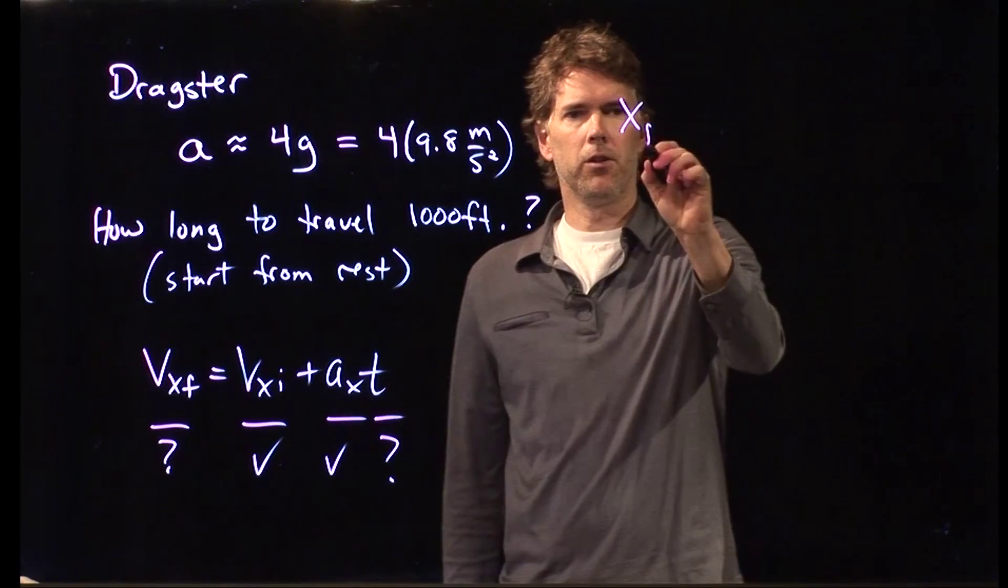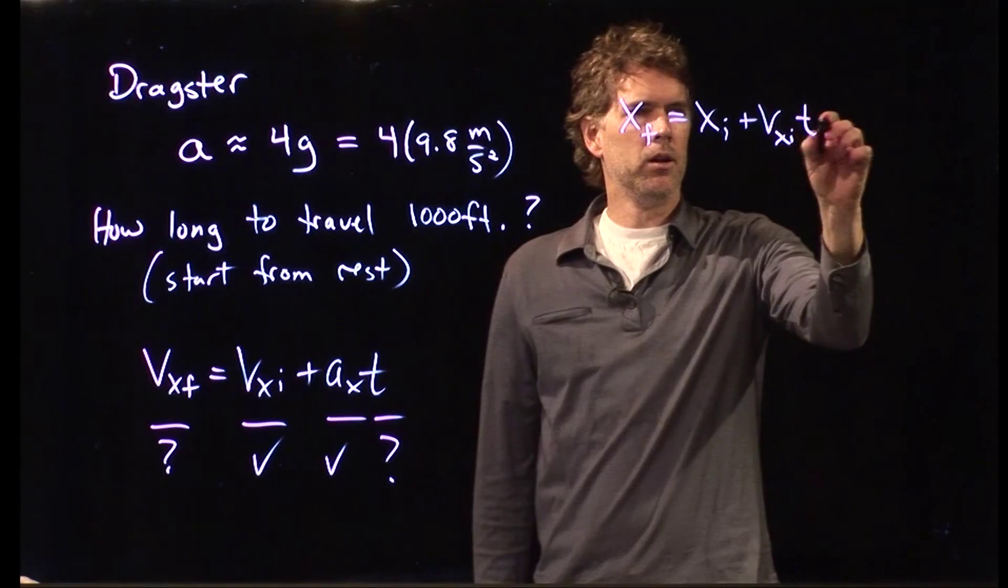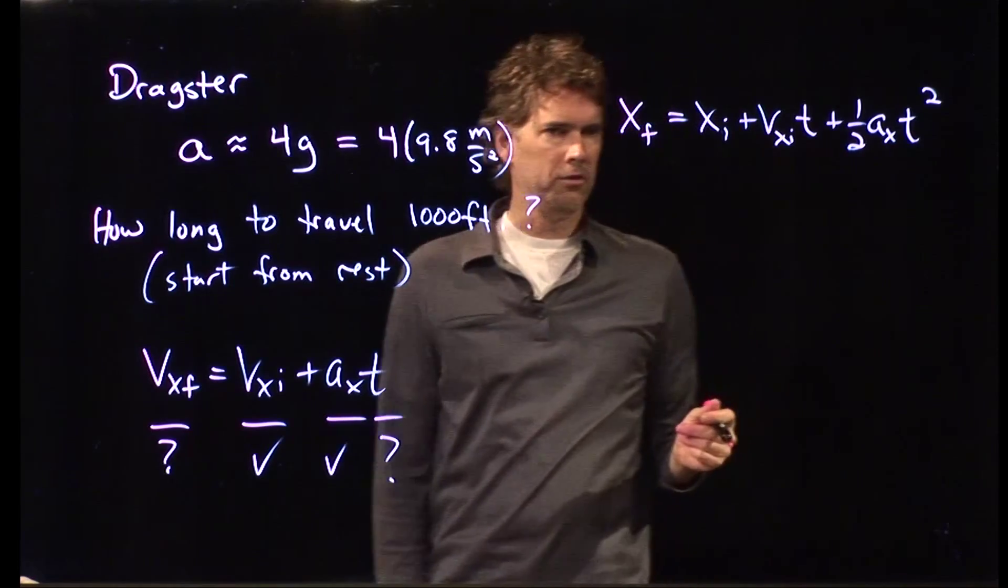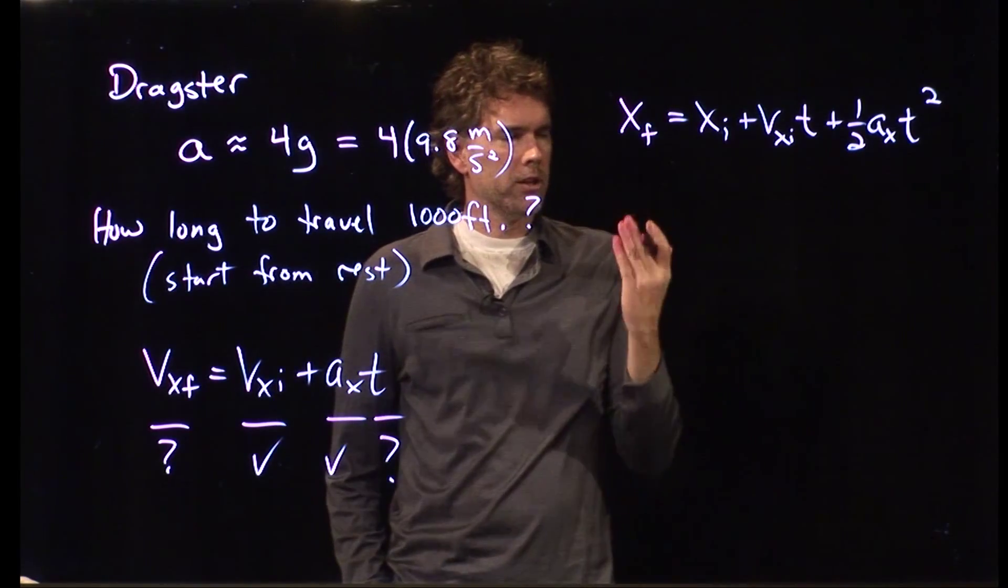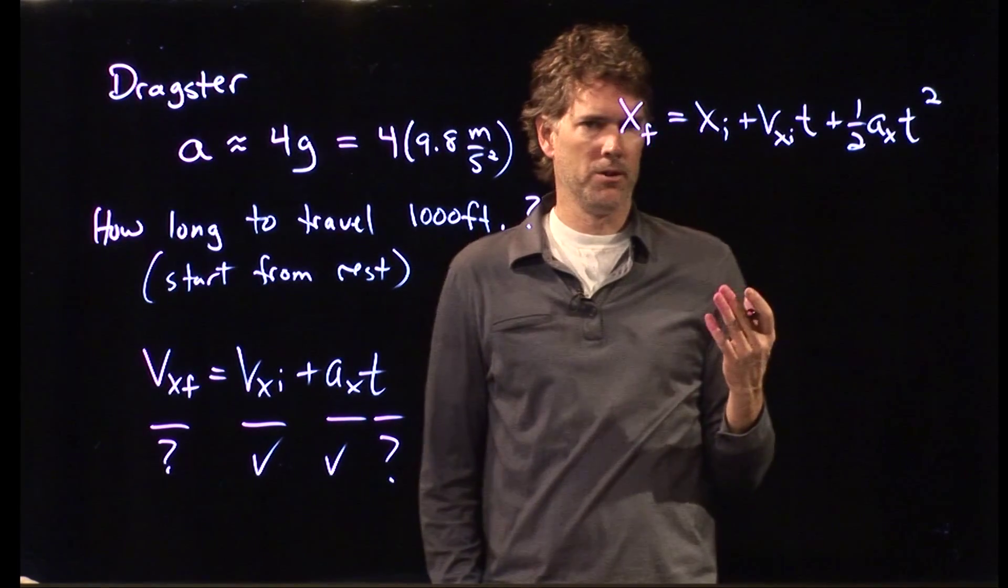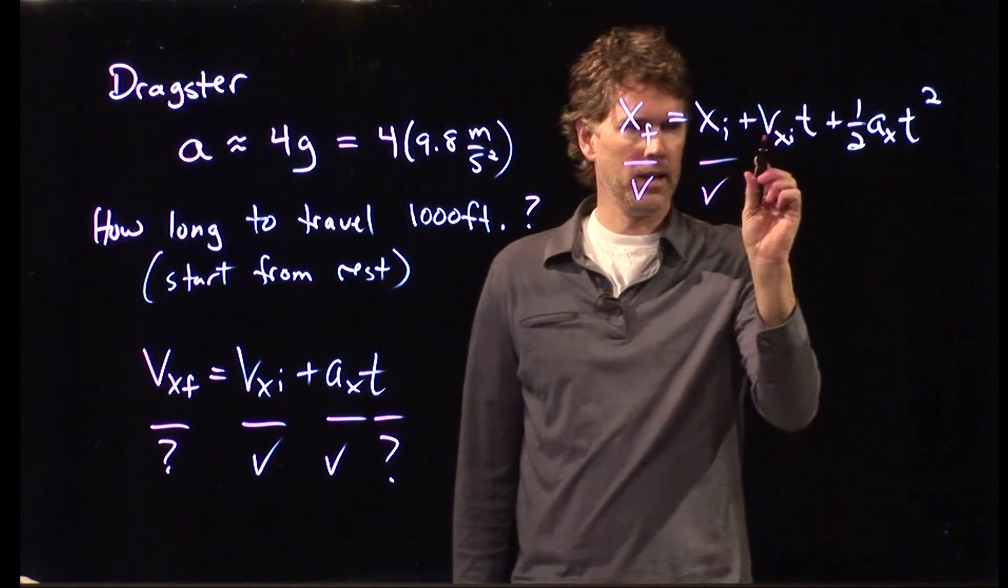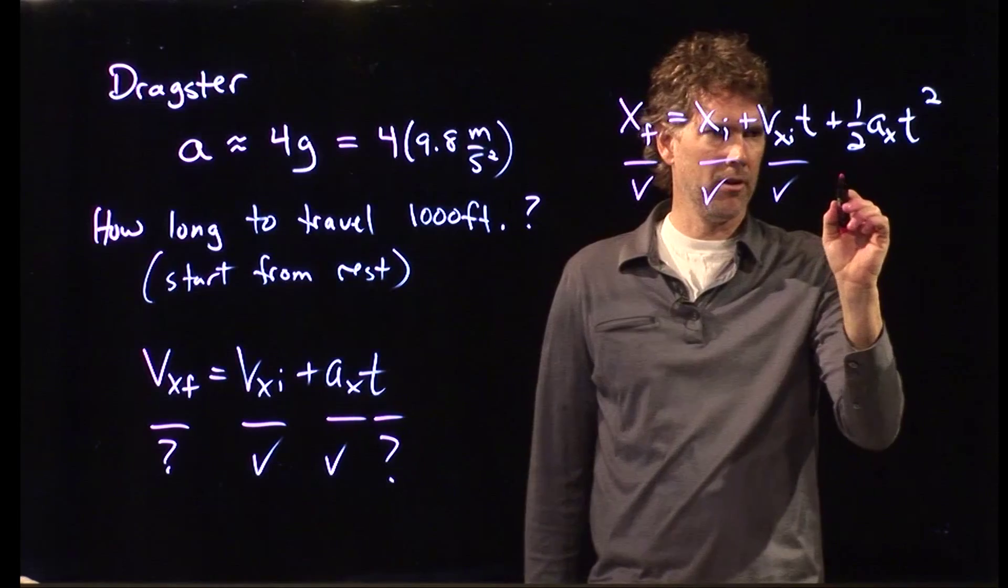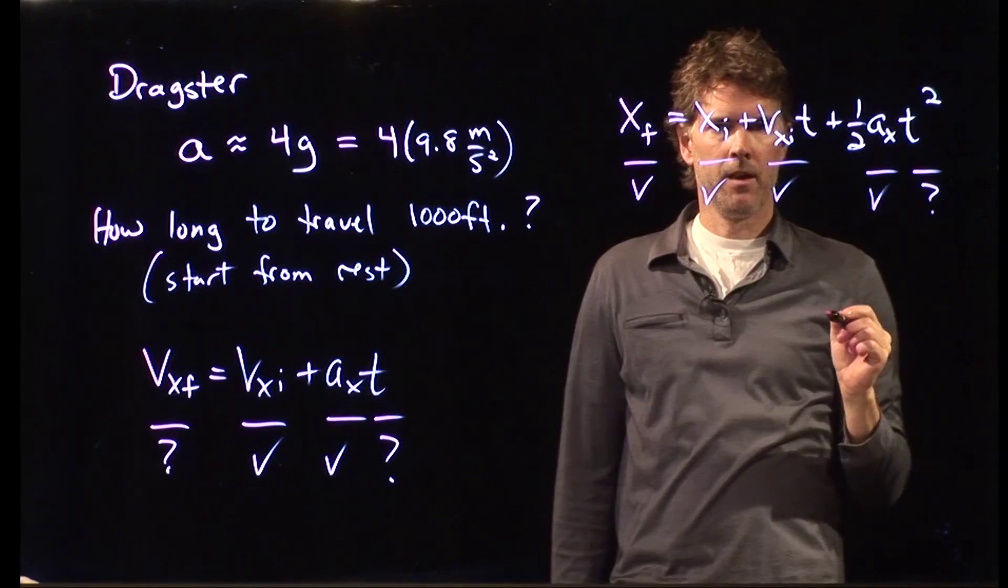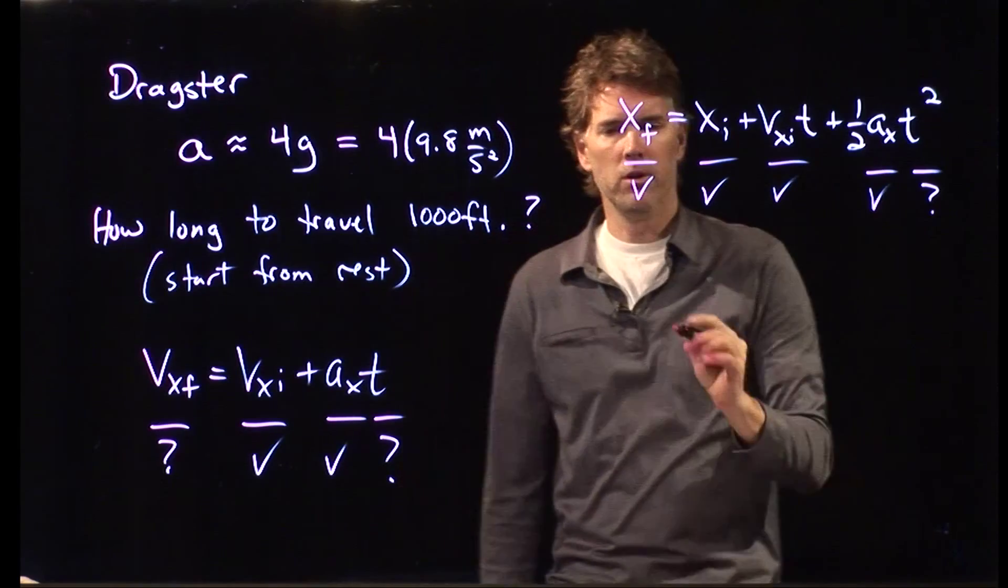So instead, let's go to this equation: x final equals x initial plus vx initial times t plus 1 half a sub x t squared. And let's look at this equation and figure out what we know and what we don't know. We know this, it's 1,000 feet. We know this, that's zero. We know this, that's zero. We know this, acceleration. We don't know time. So we have one unknown in this equation, and so we can solve it for time.